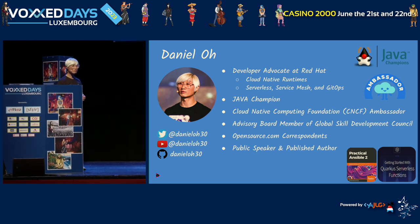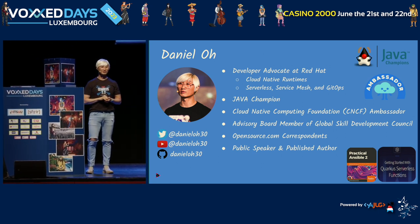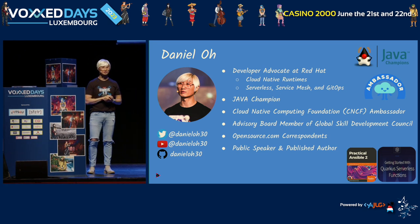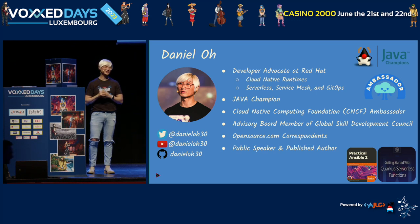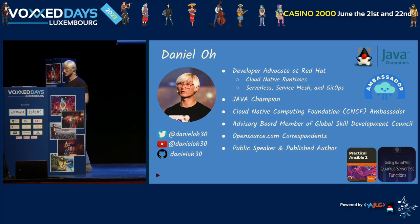My name is Daniel Oh. I work for Red Hat as a developer advocate, and I specialize in cloud and runtimes such as Quarkus and Spring Boot, and also a bunch of Java technologies like Infinispan, messaging brokers, and JavaScript as well. I've spent a lot of time bringing Java applications into the cloud - public cloud like Amazon, Google, Microsoft - as well as Kubernetes. I'm also a Java Champion and a CNCF Cloud Native Computing Foundation Ambassador for the past five or six years.